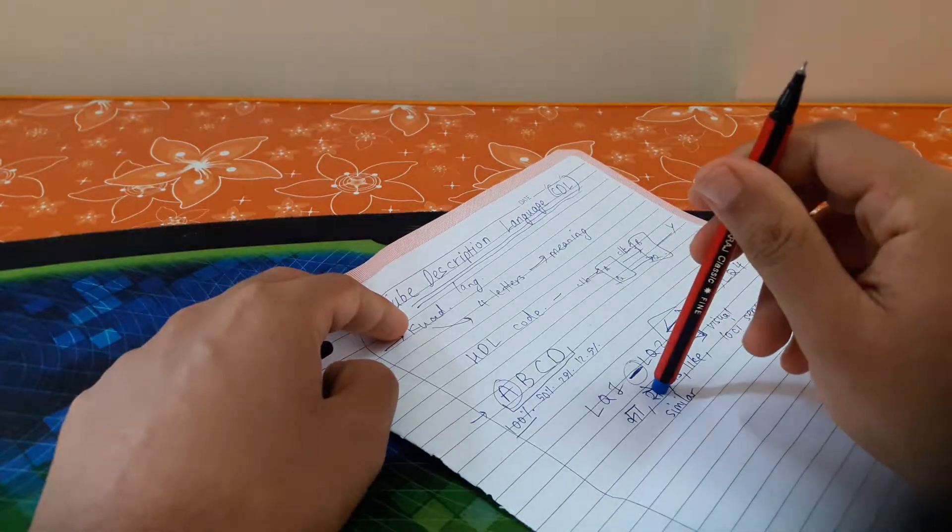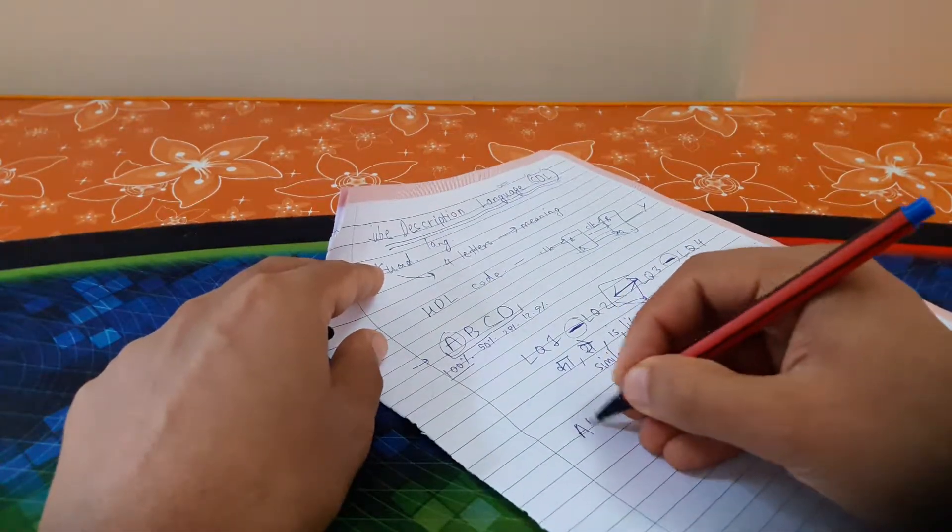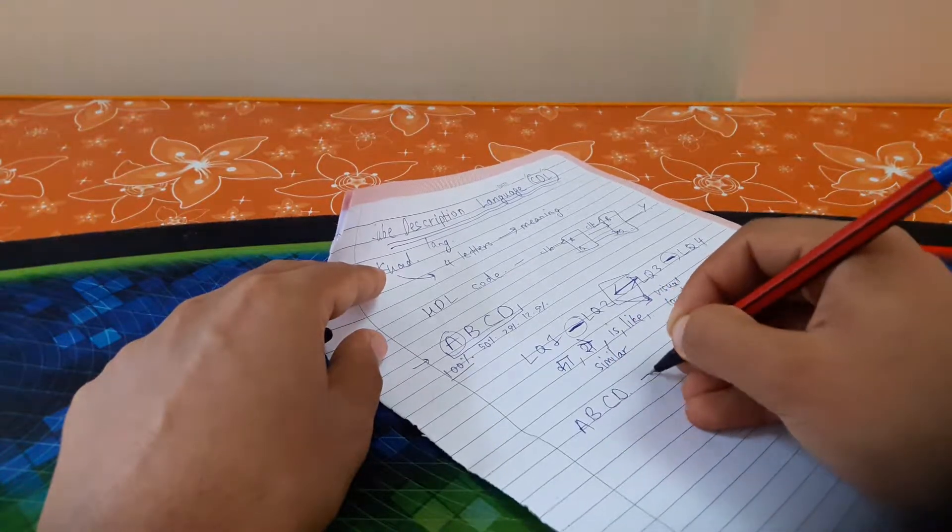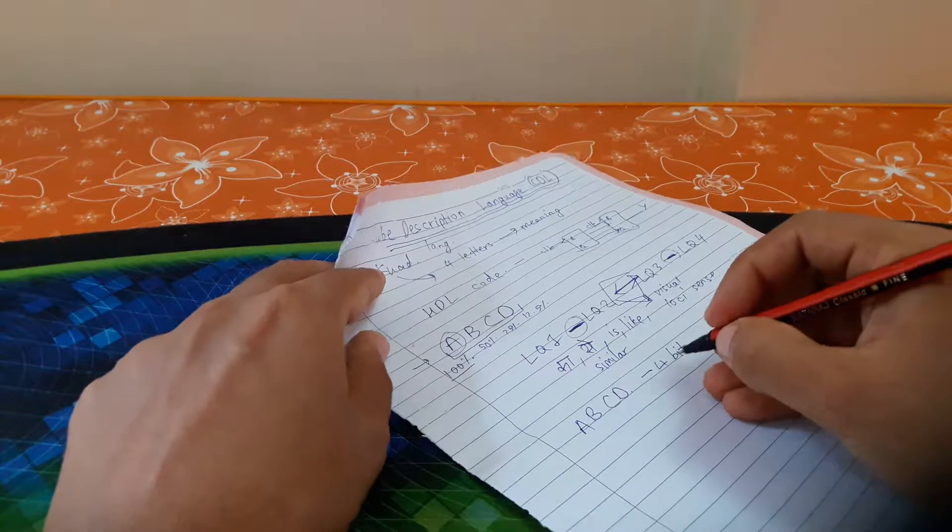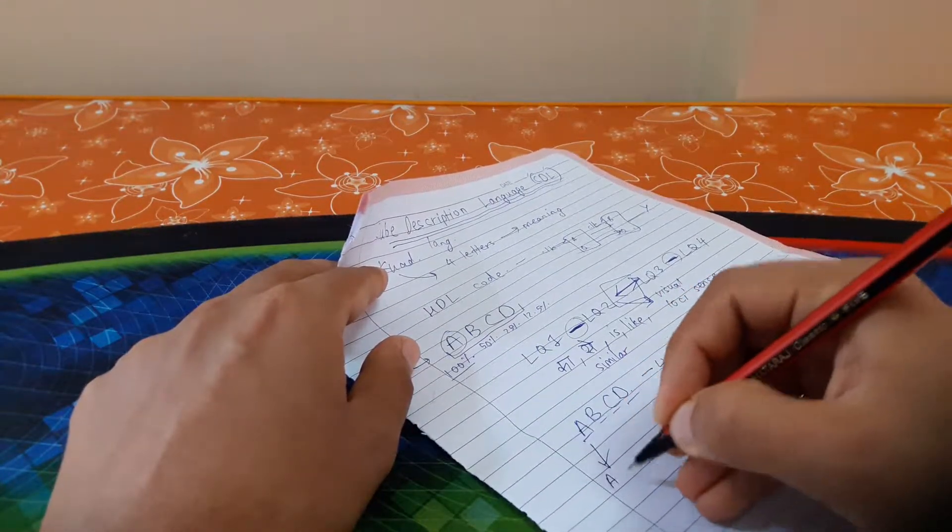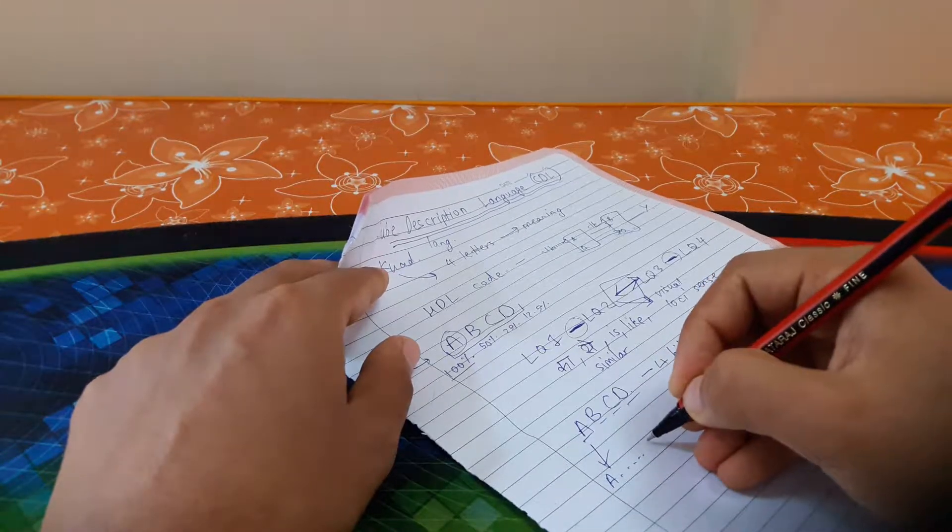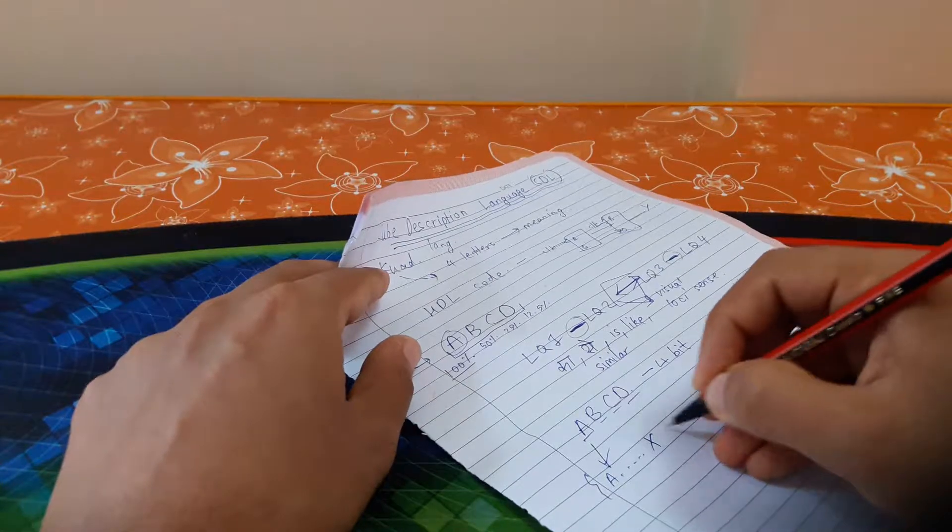This cube description language is a 4-bit language, so like ABCD, bit 1, bit 2, bit 3, bit 4, and this ranges from A up to X.